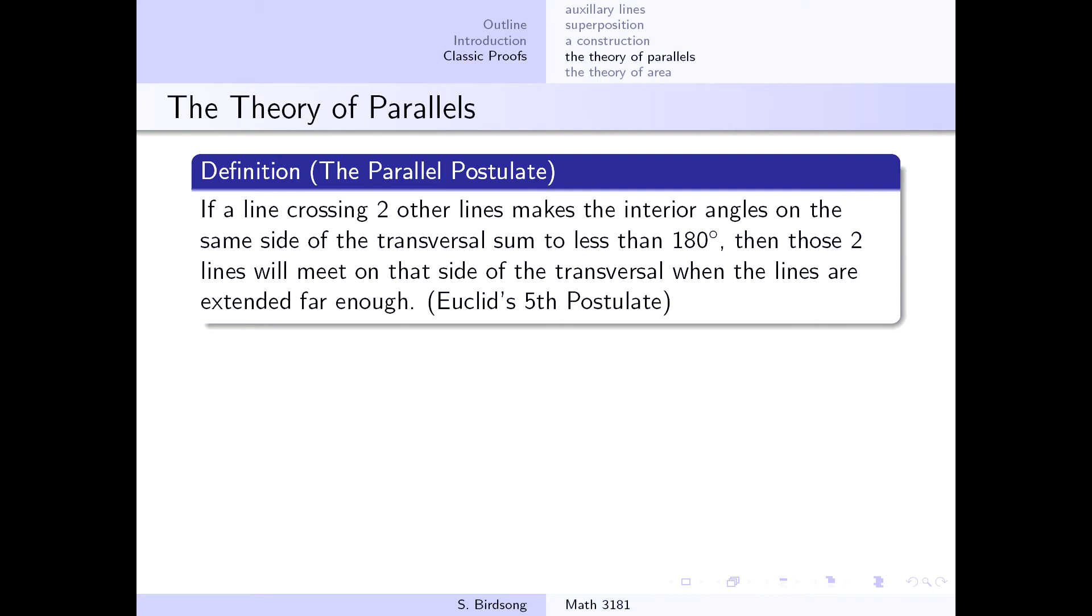if a line crossing two other lines makes the interior angles on the same side of the transversal have a degree sum that is less than 180 degrees, then those two lines will meet on that same side of the transversal, as long as you extend your lines far enough.